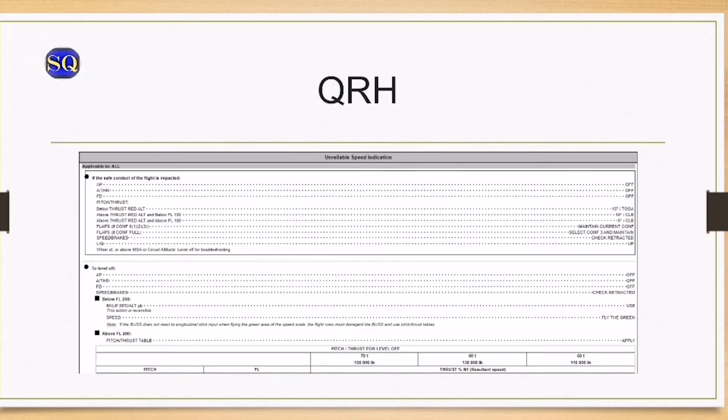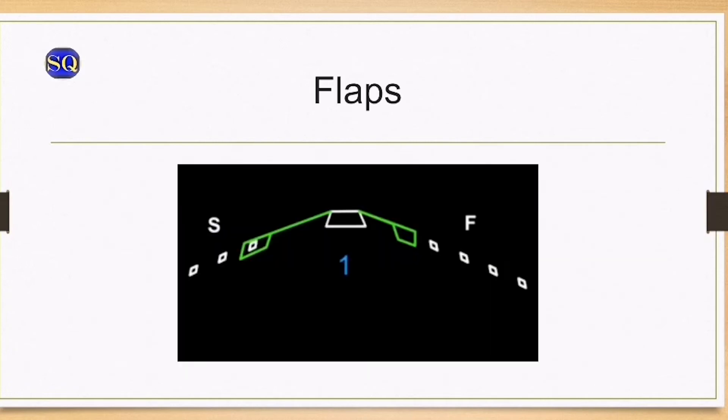When reaching circuit altitude in VMC or above MSA, the crew must level off. The RA may be used at low level to determine the altitude. The crew must apply unreliable speed indications or ADR check procedure from the QRH.